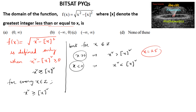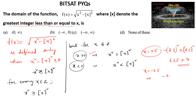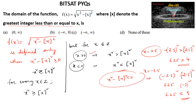For example, when x = 2.5, we get 2.5² = 6.25 > ⌊2.5⌋² = 4, which is satisfied. But for x = -2.5, (-2.5)² = 6.25 and ⌊-2.5⌋ = -3, so (-3)² = 9. Since 6.25 < 9, x² - ⌊x⌋² < 0, so the function is not defined for negative real numbers other than integers.